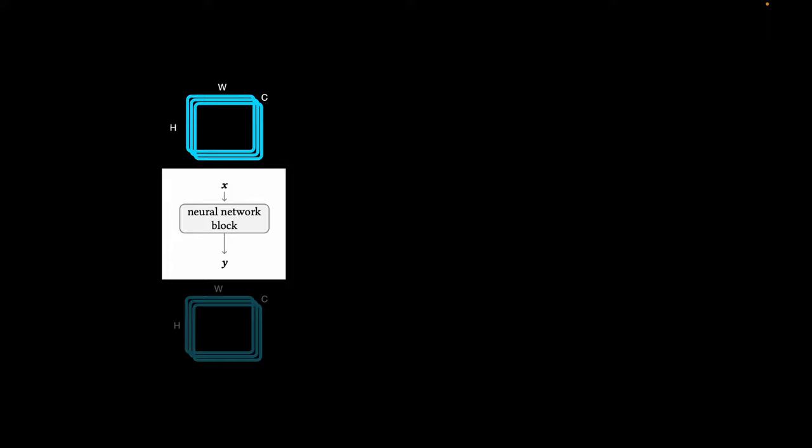It typically takes a three-dimensional tensor with height, width, and the number of channels as input, and outputs a similar dimensional tensor. To add control to this block, we first make a copy of the weights and freeze the actual weights. This trainable copy is then connected to zero convolutions, and the output of zero convolutions is sent back as input to the frozen block. So whenever we train this model, it's this trainable copy that gets updated, but the actual pre-trained generative model remains frozen.